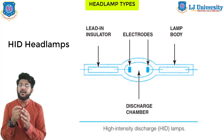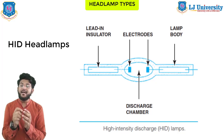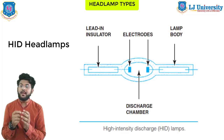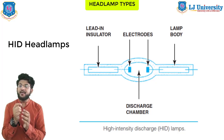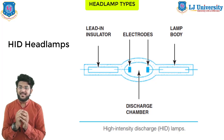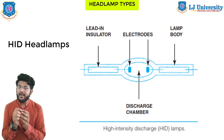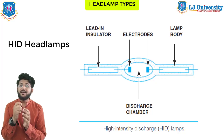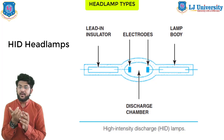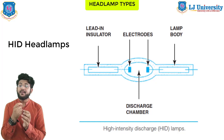HID lamps produce light in both ultraviolet and visible wavelengths, causing highway signs and other reflective materials to glow. These lamps do not rely on a glowing element for the light. Instead, the headlamp contains a pair of electrodes similar to spark plug electrodes, surrounded by gas. The electrode is the end of the electrical conductor that produces a spark, and light is produced by an arc that jumps from one electrode to another, like a welder's arc.